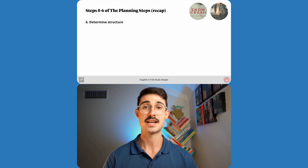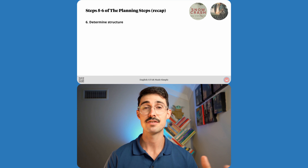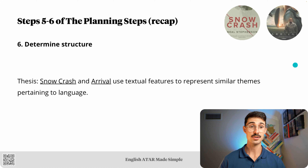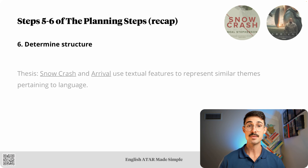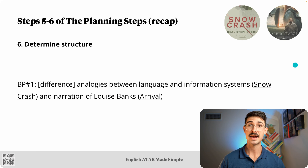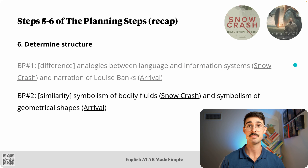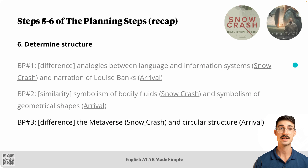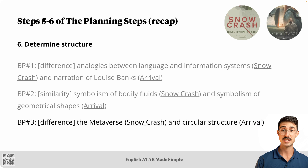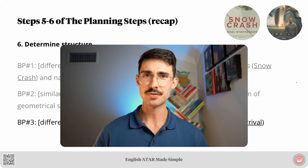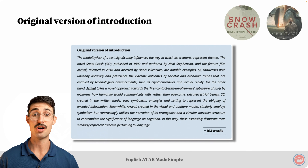On the other hand, Arrival represents the theme of language and cognition and uses narration, circular structure, and symbolism of geometrical shapes as textual features to represent that theme. Here is the sixth and final planning step — determined structure. We're just looking at a condensed version; the full version is in the PDF study notes. The thesis for this question is: Snow Crash and Arrival use textual features to represent similar themes pertaining to language. Body paragraph one will discuss a difference — how Snow Crash uses analogies and how Arrival uses narration. Body paragraph two discusses a similarity: how both texts use symbolism. Body paragraph three discusses another difference — Snow Crash's setting of the metaverse and Arrival's circular structure.